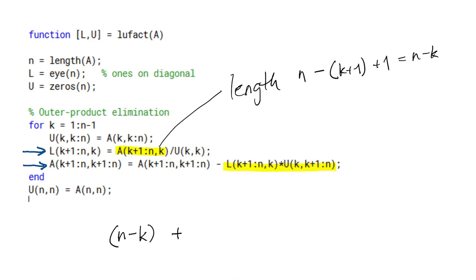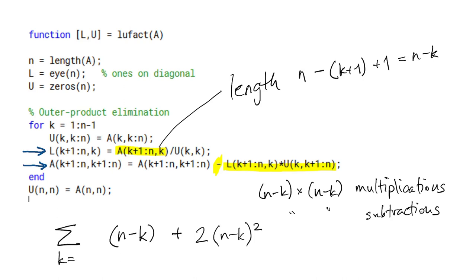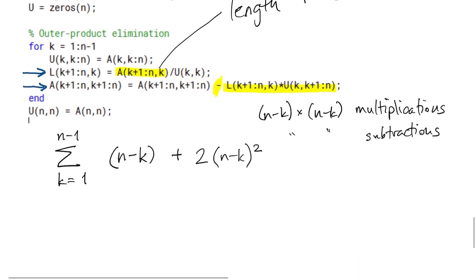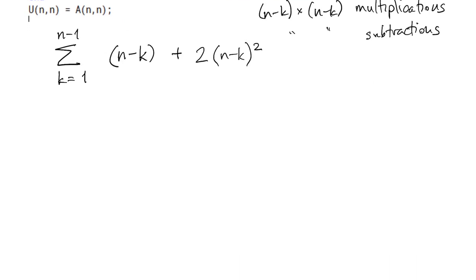On the second line, we have two things, we have an outer product here, and again, each of those vectors has length n minus k. And so you get an n minus k by n minus k matrix, each entry of which is one multiplication. And then with that matrix, we do a subtraction with a similarly sized matrix. And so that means we have that many subtractions as well. So altogether, that line contributes 2 times n minus k quantity squared flops. These are all inside a loop on k. k ranges from 1 to n minus 1, so we have to add them all up. To make this a little easier to deal with, I'm going to change the summation variable.